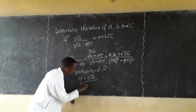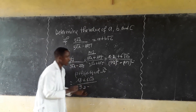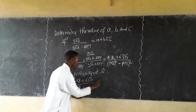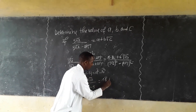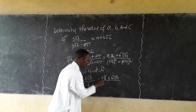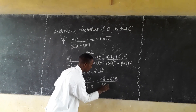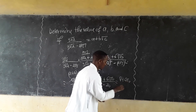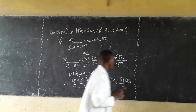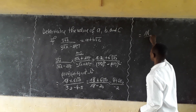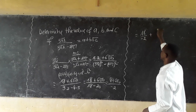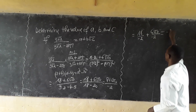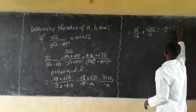We have the numerator as 18 plus 6√10. The denominator is 18 minus 20, which equals minus 2. So we split the fraction: 18 over minus 2, plus 6√10 over minus 2. That gives us minus 9 minus 3√10.